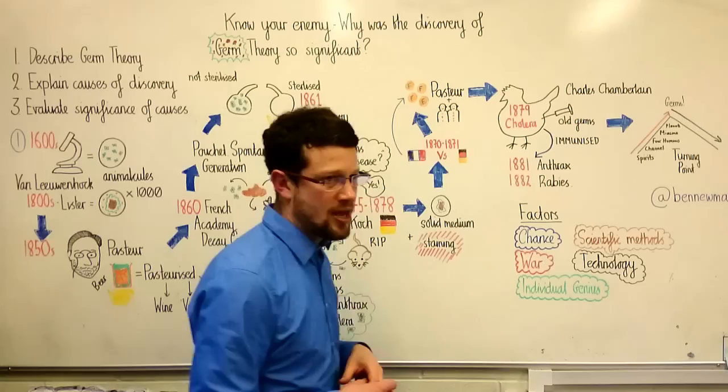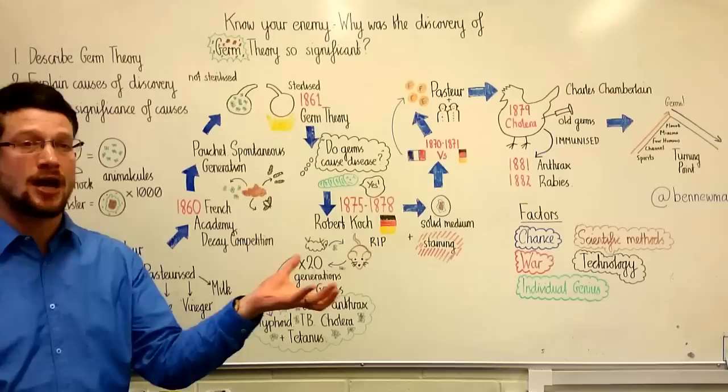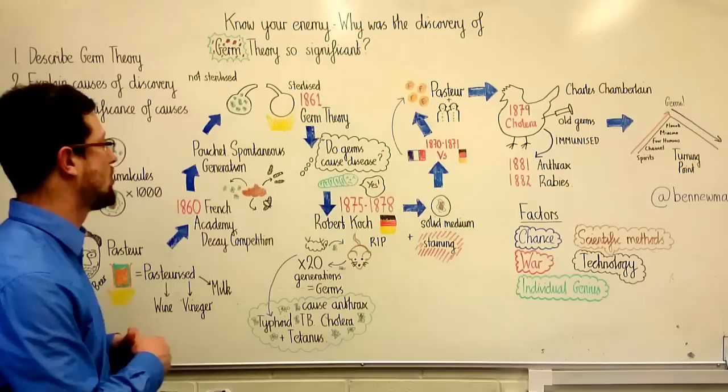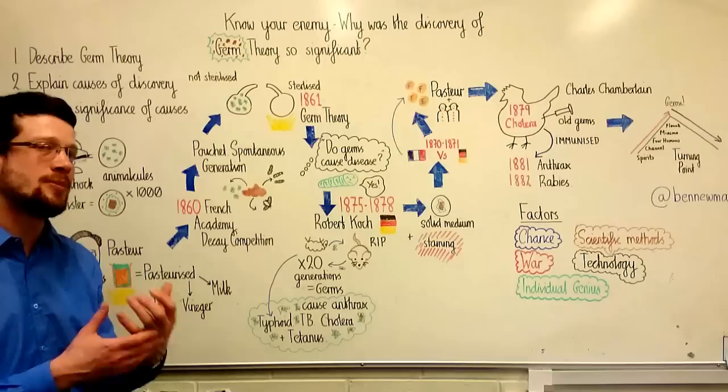To prove this theory wrong, Pasteur took two flasks. One of those flasks, or in fact both of them, he opened to the open air, so they were exposed to these animalcules, or germs, as he came to call it. He then heated one up to kill all the germs inside it, sterilising it, and then sealed it with some material that should otherwise rot. For the other flask, he simply sealed it.